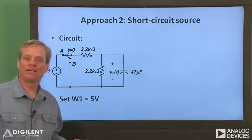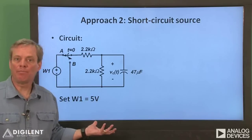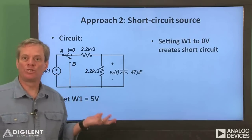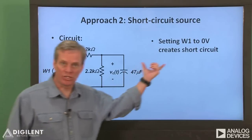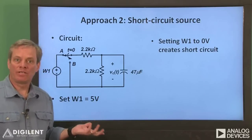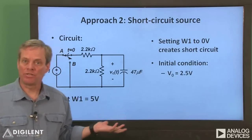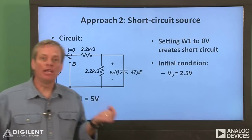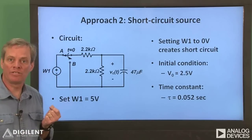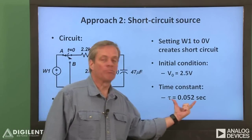Now let's look at our second way to create a natural response, by replacing the voltage source with a short circuit. Here's the circuit we'll be using. It's identical to our previous example circuit, except that we'll apply voltage to the capacitor with our waveform generator. When the waveform generator's voltage goes to 0 volts, the power supply looks like a short circuit. So our conceptual circuit for this situation is shown here. To compare our results to our previous case, we'll apply a 5 volt change using the waveform generator. When the applied voltage is 5 volts, the capacitor voltage is 2.5 volts. However, unlike our previous circuit, the equivalent resistance is a parallel combination of two 2.2 kilohm resistors, or 1.1 kilohms. This results in a time constant which is about half of our previous value, or about 0.052 seconds.